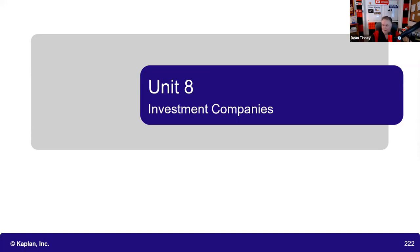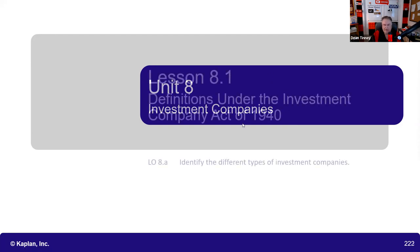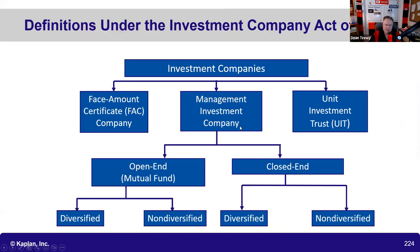REITs and mutual funds must pass through 90% of their net investment income — very testable. They don't pass through losses, just income. You pay tax on whatever the REIT passes through to you. You buy a REIT for the same reasons you buy a mutual fund: professional management, diversification, and ease of ownership.